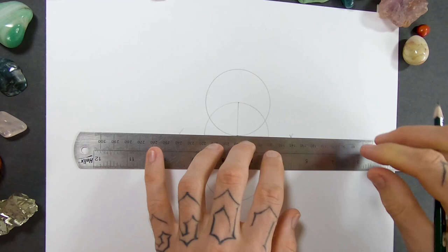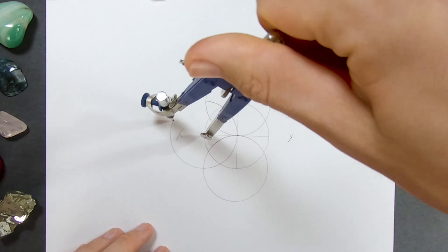Now I can use the points where the horizontal line crosses the circle to draw two more circles still the same size.